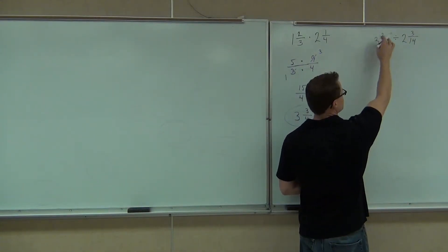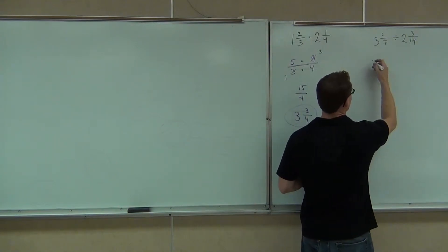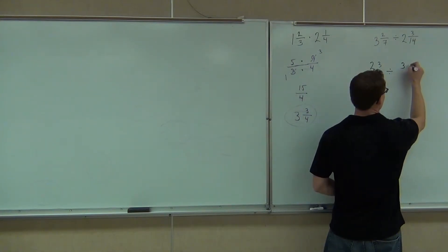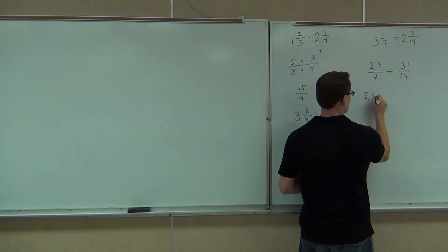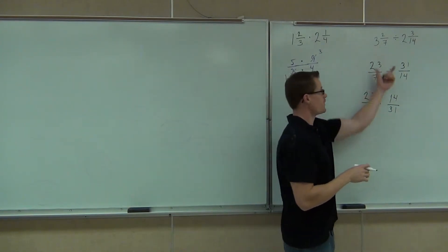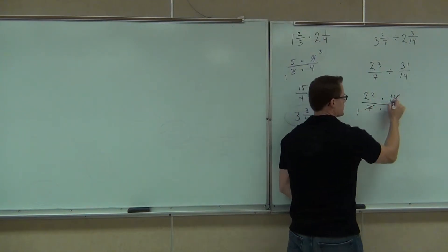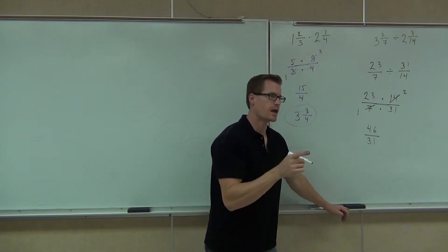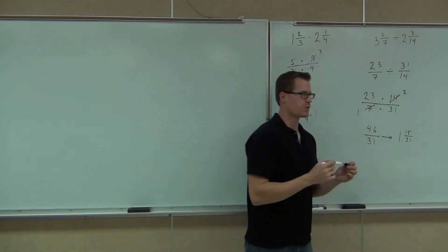Next one — we're going to do 23 over 7 divided by, what does that give you? 31. So times 14 over 31. Now we're back to a multiplication problem. You cannot simplify until you get down to this step, which is why we extend our line, put our dots. Now we can simplify those 7s, and you get 46 over 31. You've got to change it back to a mixed number — that's 1 and 15 over 31.